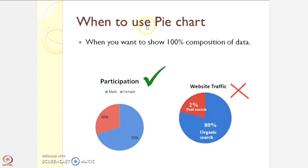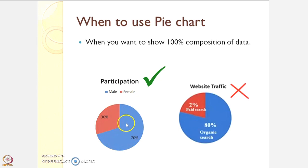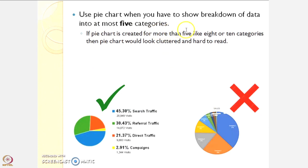Pie chart. When to use a pie chart? You use a pie chart when you want to show 100% composition of your data. For example, in this image the composition of data is 100%, whereas in this other image the composition is 82%, so that is a wrong pie chart. Use a pie chart when you have to show a breakdown of data into at most 5 categories — if you create a pie chart for more than 5 categories, like 8 or 10, the pie chart will look cluttered.